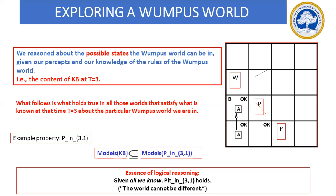This is how the Wumpus World problem works — using logical representation and reasoning to derive rules about the environment. In the next session, we will discuss different ways logical statements can be represented, including propositional logic and predicate logic, and how to derive reasoning from them.